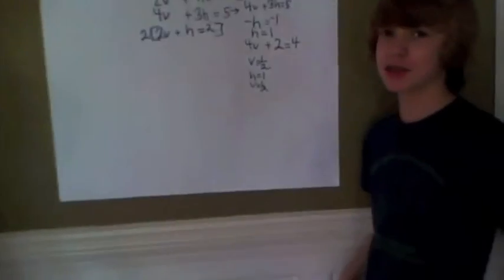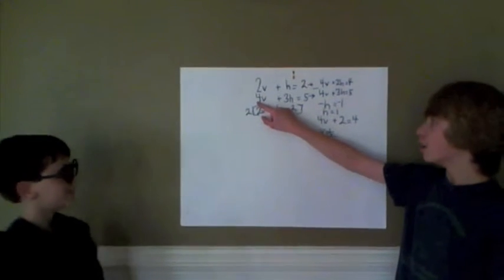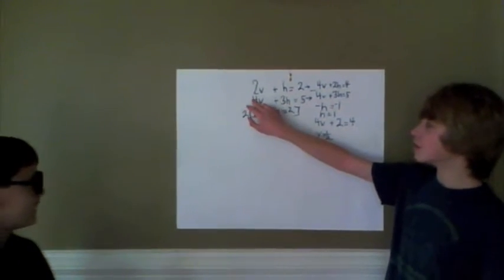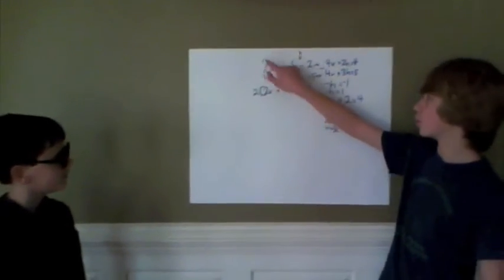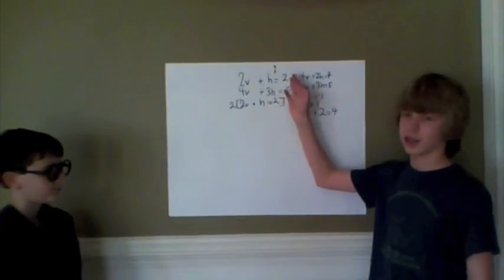And, keep in mind, this doesn't work for all problems. It only works here, because 2 is half of 4. But, normally, what you would do is, you would put 4 in front of 2, and put parentheses around this, and 2 in front of 4, and parentheses around this, and just multiply down the line.